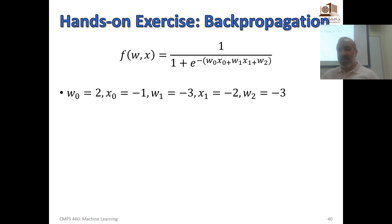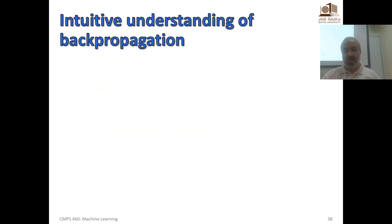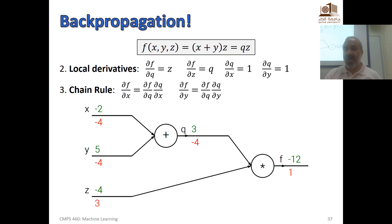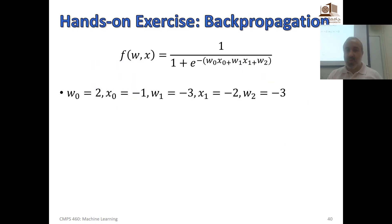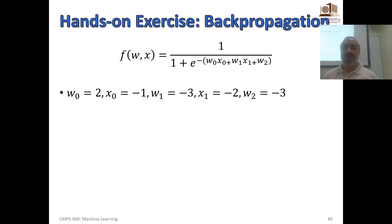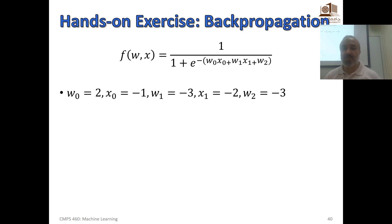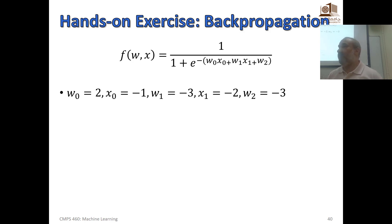We had a simple example last time. Today, inshallah, we'll see two more complex examples. This is the first one, and this is where we stopped last time. This is a function of w and x — multiple weights and multiple inputs — expressed as 1 over 1 plus e to the power minus the weighted input. We can compute the gradients manually, but we want to see how backpropagation makes computing gradients much easier.